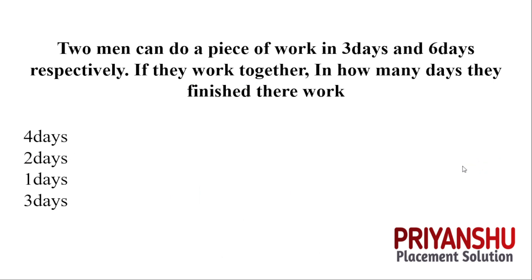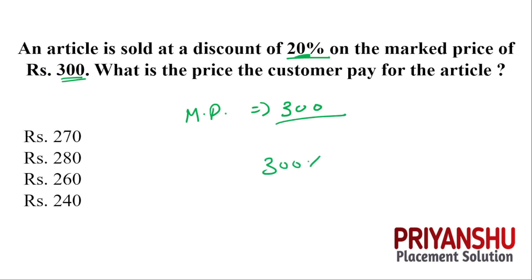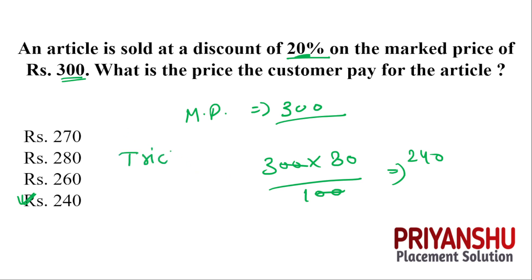An article is sold at a discount of 20% on the marked price of 300. Discount amount = 20% of 300 = 60. Selling price = 300 − 60 = 240. The customer pays 240. Here's a useful percentage trick: if a value decreases by n%, multiply by (100 − n)/100.